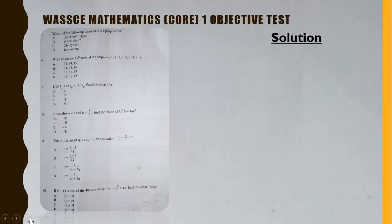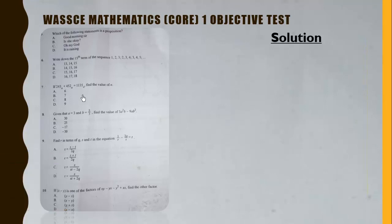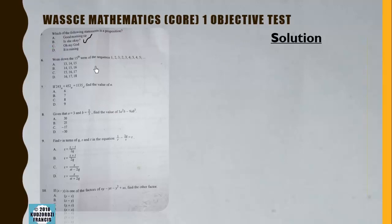A proposition is a statement that can either be true or false. Among the options, 'It is raining' is a proposition — it can be true (it is raining) or false (it is not raining).